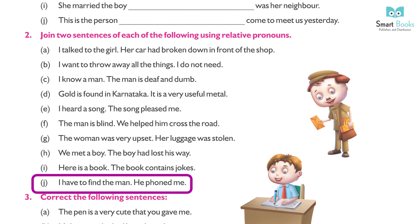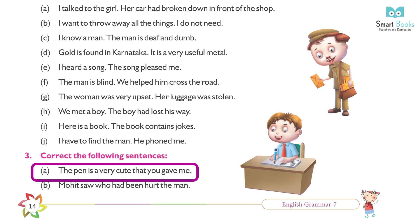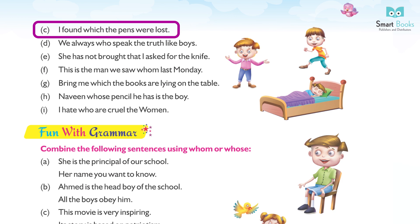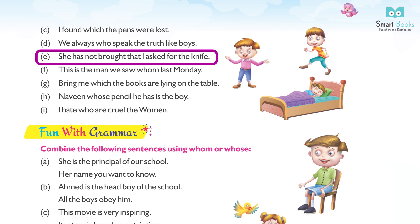(j) I have to find the man; he phoned me. Answer: I have to find the man who phoned me. Exercise 3 — Correct the following sentences. (a) The pen is a very cute that you gave me. Answer: The pen is very cute that you gave me. (b) Mohit, who had been hurt, the man. Answer: Mohit, the man who had been hurt. (c) I found which the pens were lost. Answer: I found the pens which were lost. (d) We always who speak the truth like boys. Answer: We like the boys who always speak the truth. (e) She has not brought that I asked for the knife. Answer: She has not brought the knife that I asked for.